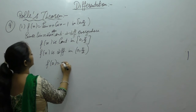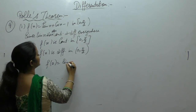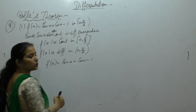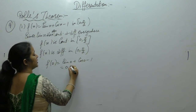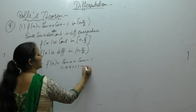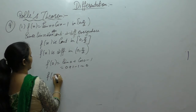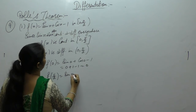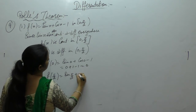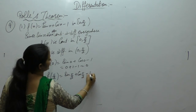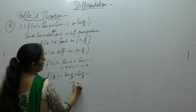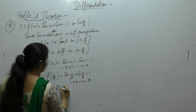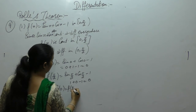Now f(0) = sin 0 + cos 0 - 1 = 0 + 1 - 1 = 0. And f(π/2) = sin(π/2) + cos(π/2) - 1 = 1 + 0 - 1 = 0. So f(0) = f(π/2).